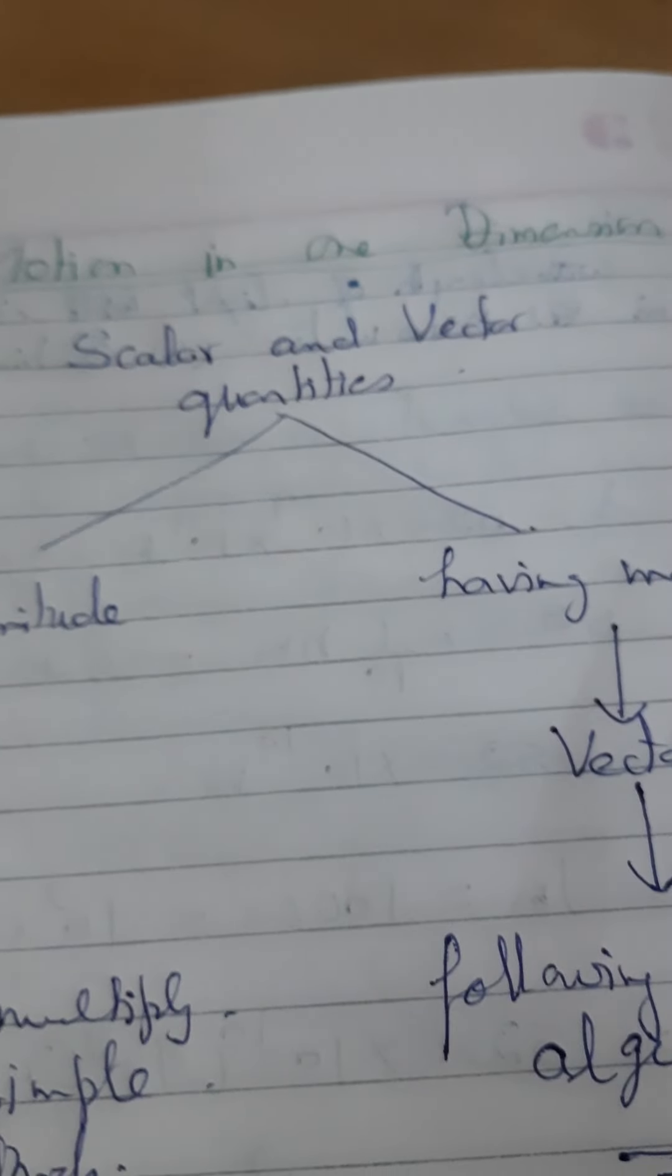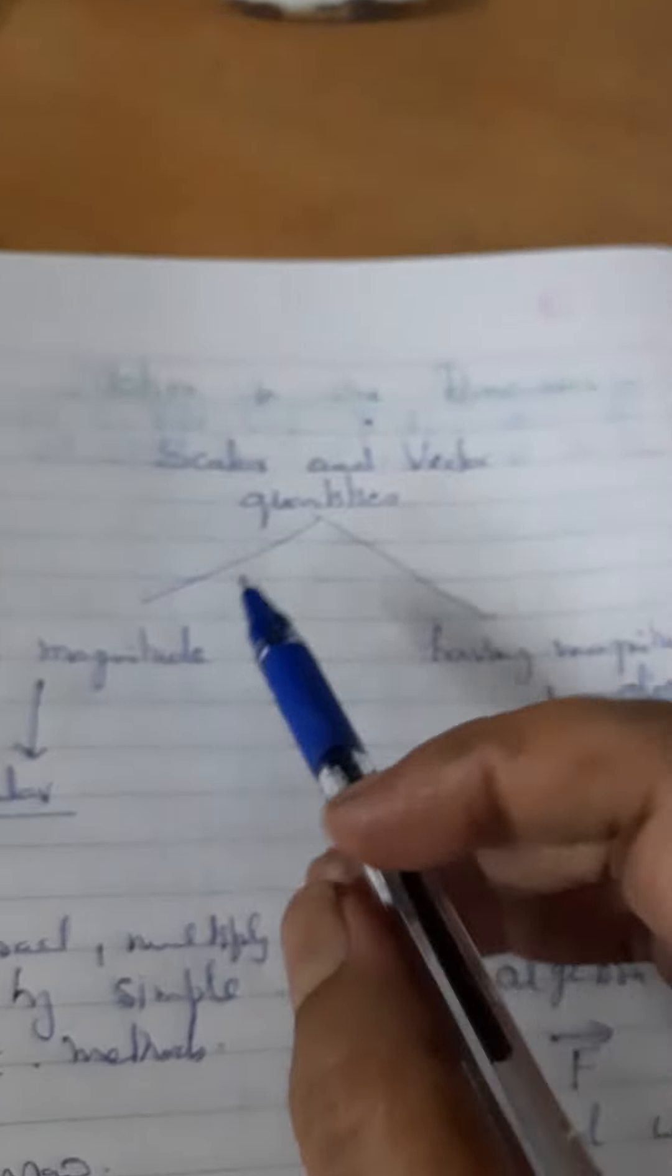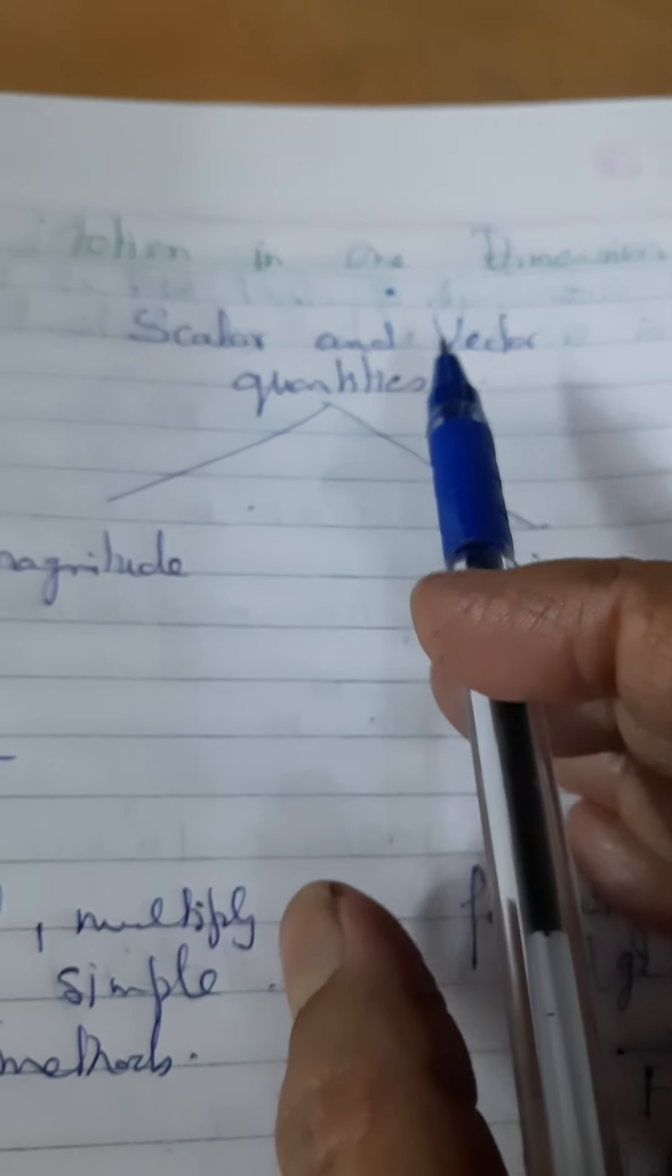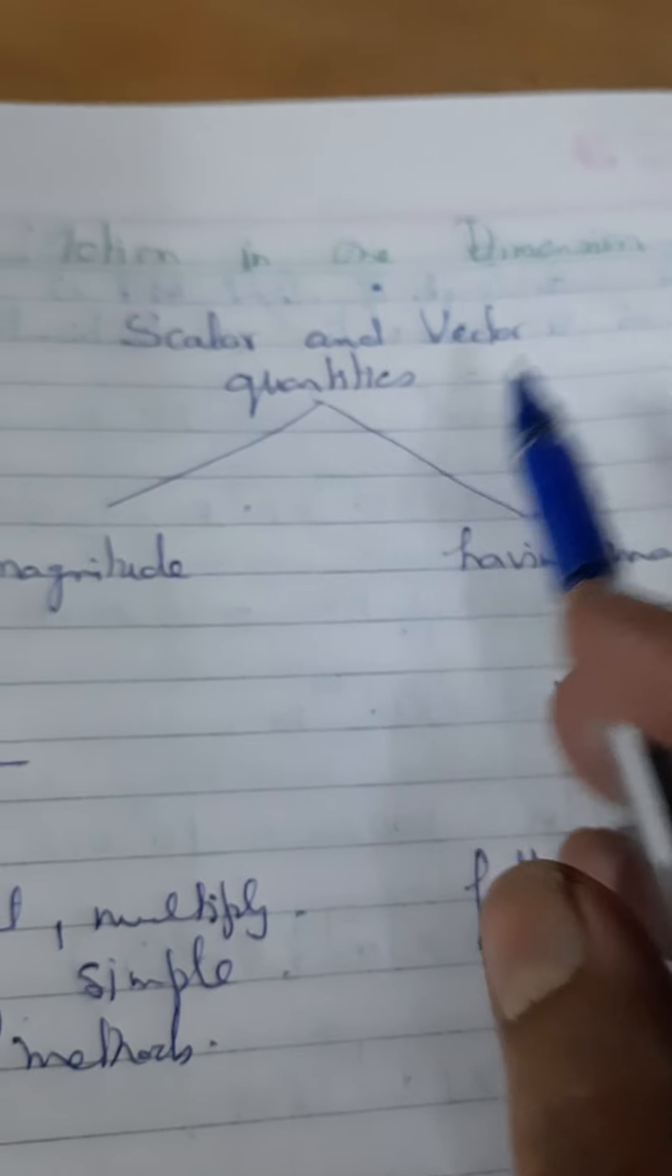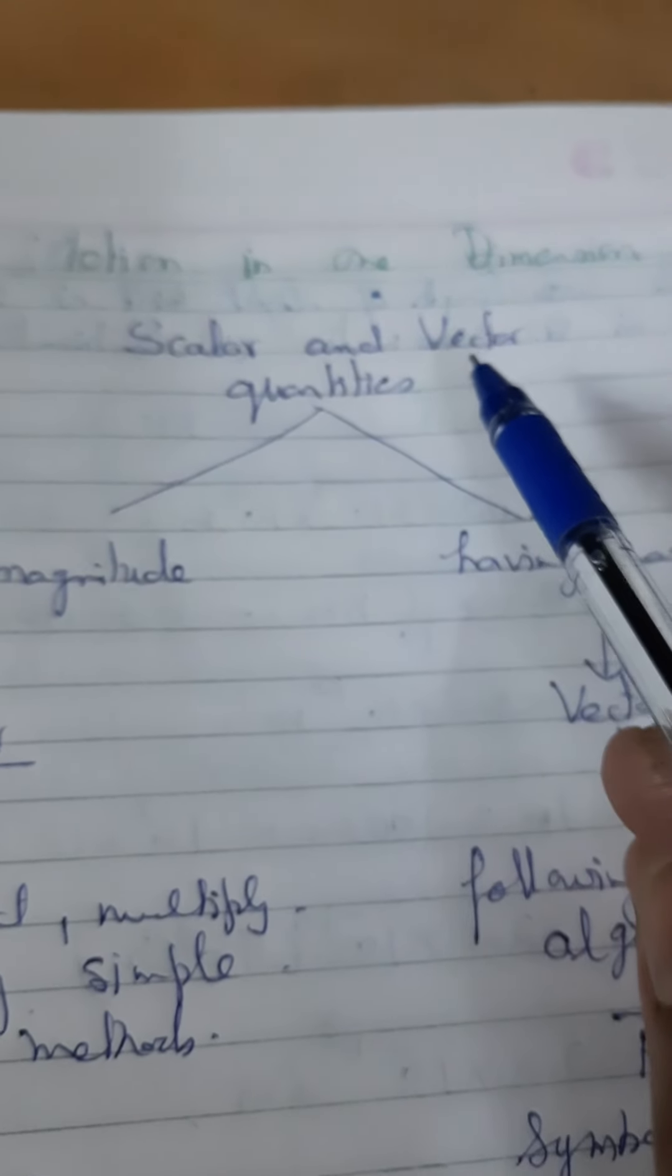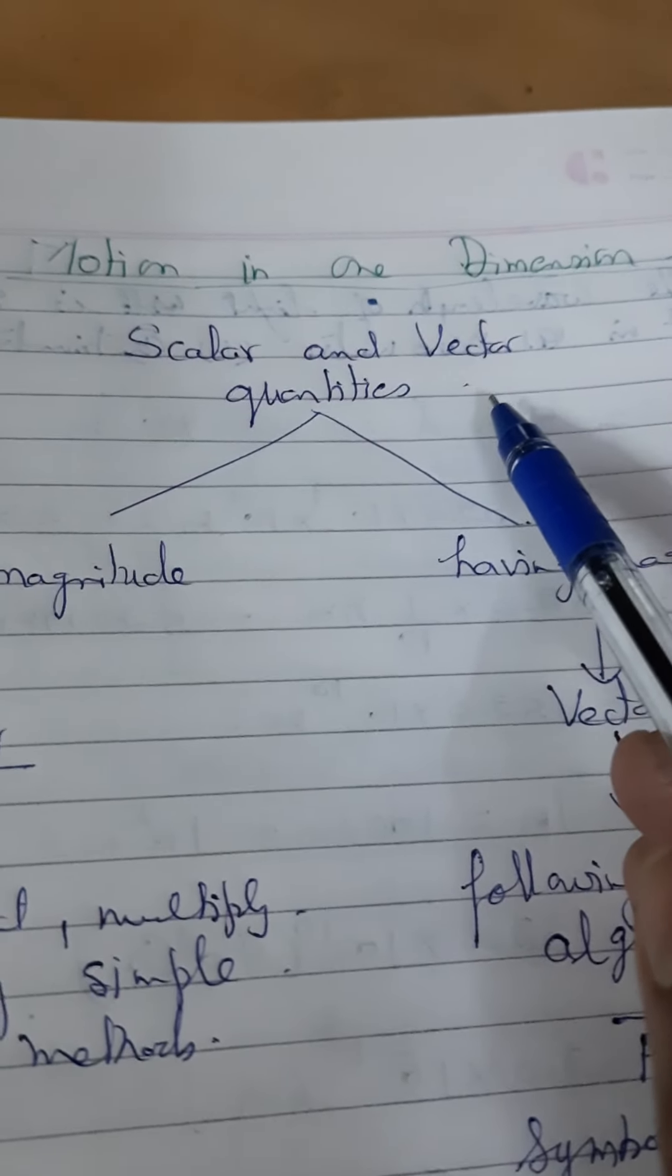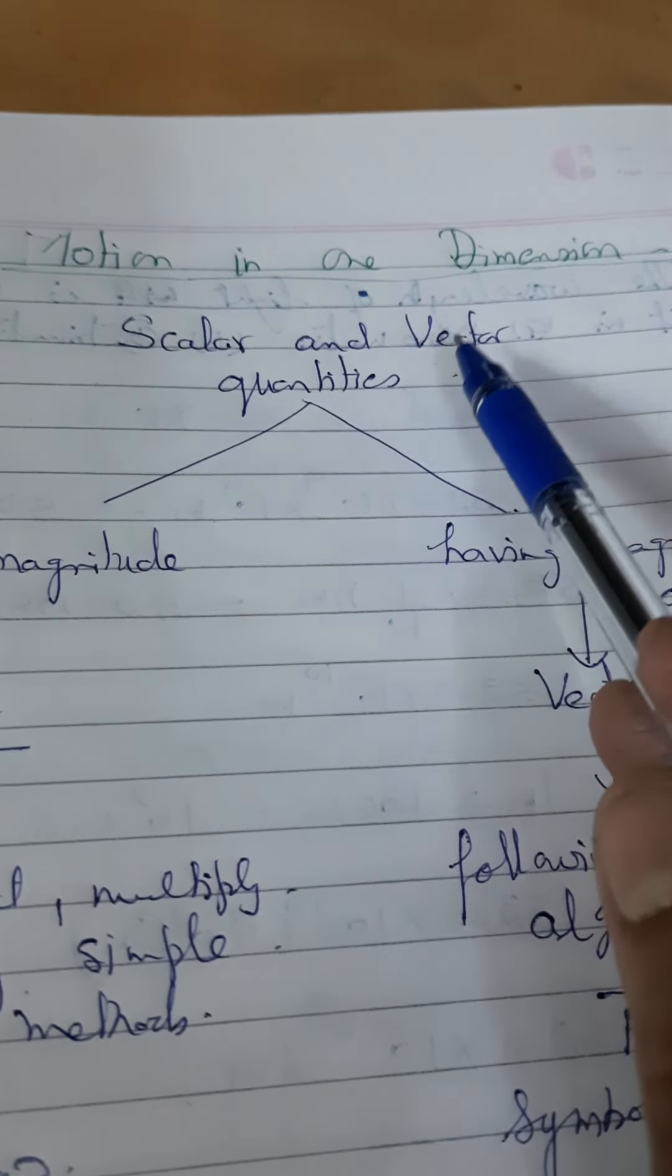Hello everyone. Today we will discuss scalar and vector quantities. What are physical quantities? Quantities which can be measured are called physical quantities, and they can be divided into two categories.